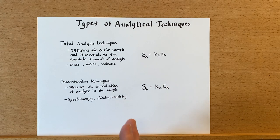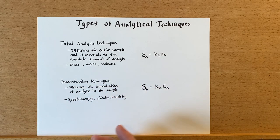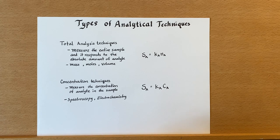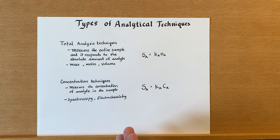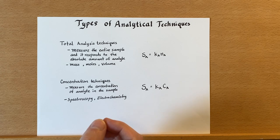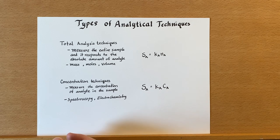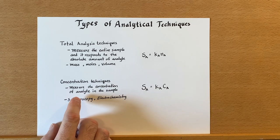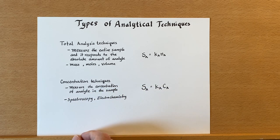All right, enough on total analysis techniques. There's another major type of technique which is called concentration technique. And this is where we don't have to measure the entire sample. We can actually just measure a portion of it, which is one of the major advantages of using a concentration technique. We can measure smaller amounts of it. We don't have to measure the entire thing. And somehow we directly measure the concentration of analyte in the sample.